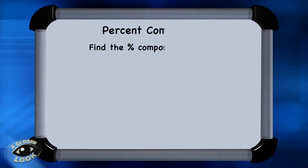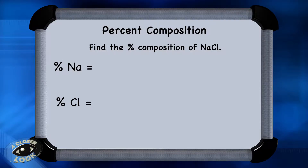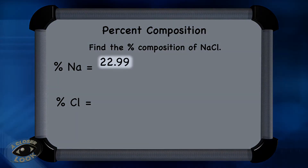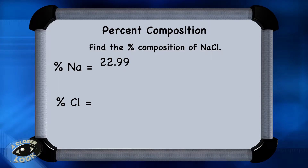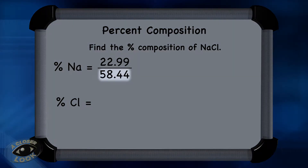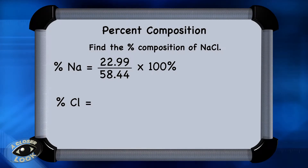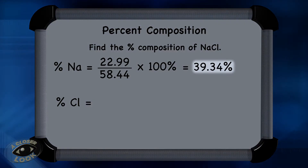The first problem asks to find the percent composition of sodium chloride. There are two elements in the compound: sodium and chlorine. You need to figure out the percent by mass of each element. Start with sodium in sodium chloride. Take the mass of sodium from the periodic table, 22.99 grams — there's only one sodium per formula unit of sodium chloride. Put that over the molar mass of the compound, which is 58.44, then multiply times 100. The percent of sodium in this compound is 39.34.